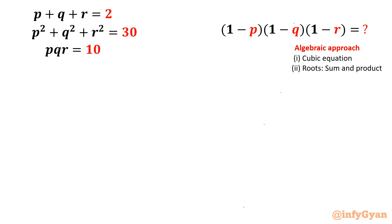We have to find the expression value (1-p)(1-q)(1-r) if the system of equations is known: p plus q plus r equal to 2, p square plus q square plus r square equal to 30, and pqr equal to 10.